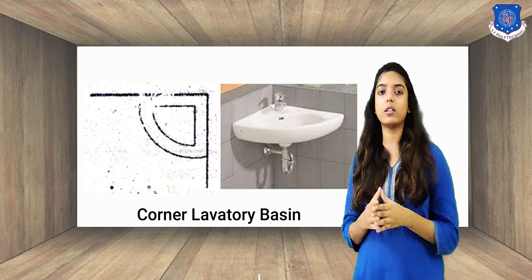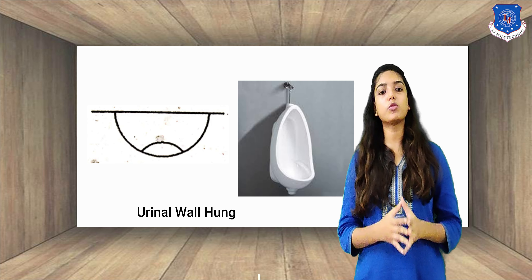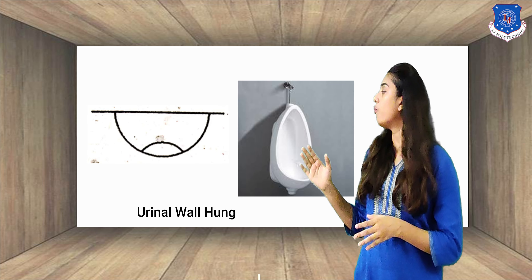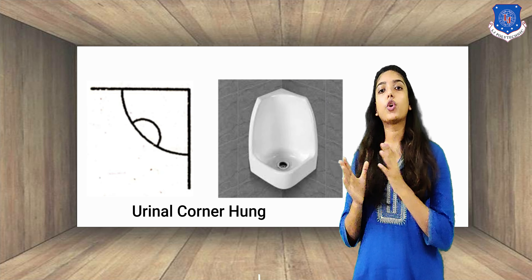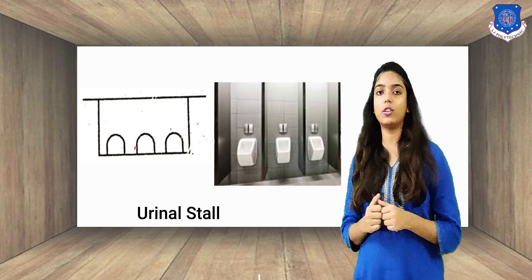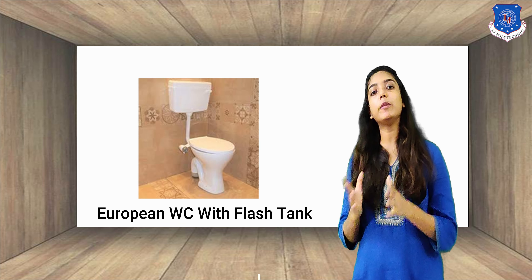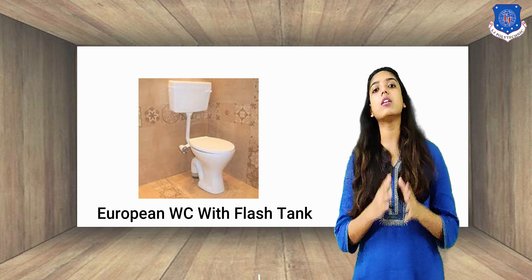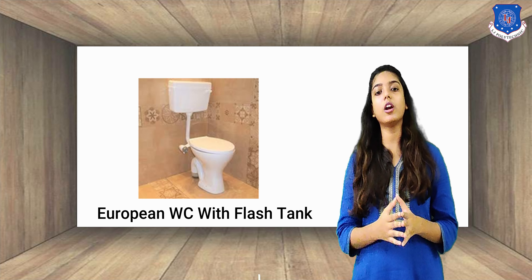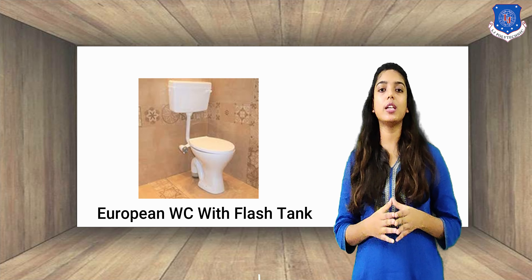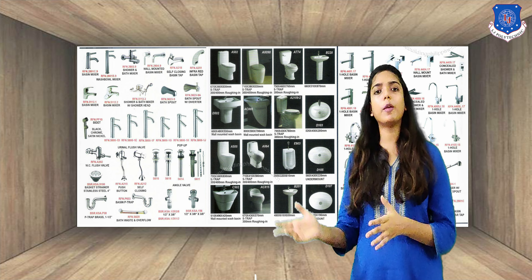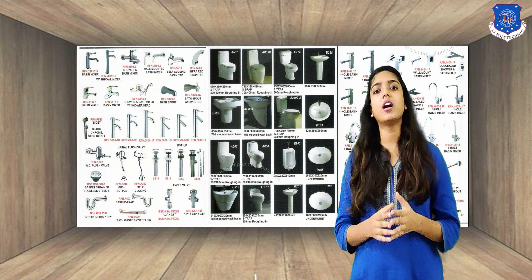There are multiple types of basins — for example, wall fixed basin and corner fixed basin. There are also multiple types of urinals used in buildings, such as wall hung urinal, corner hung urinal, floor fixed urinal, and urinal stalls. There are also multiple types of WCs used in buildings, for example European style WC and Indian type WC.